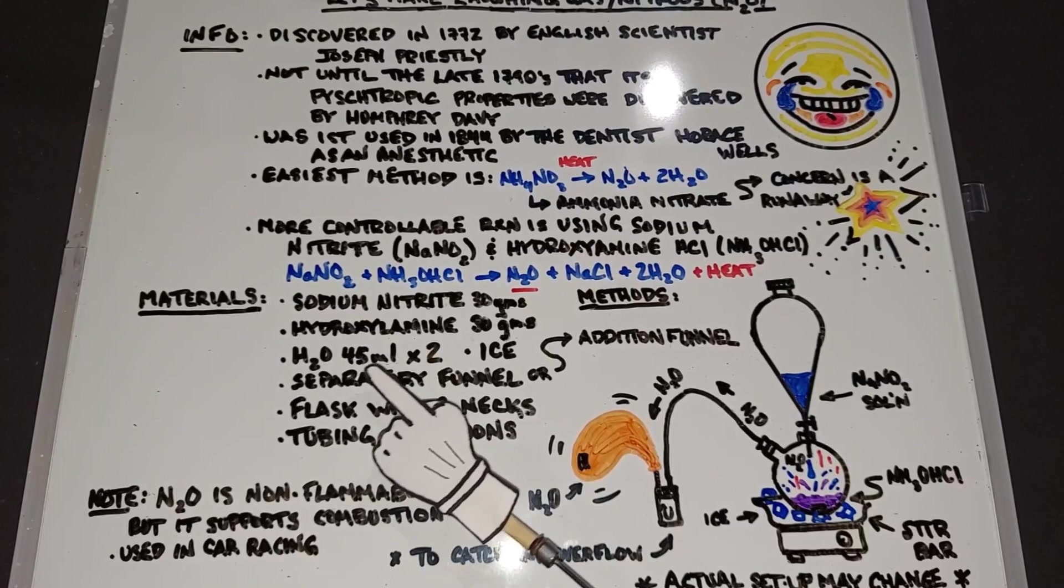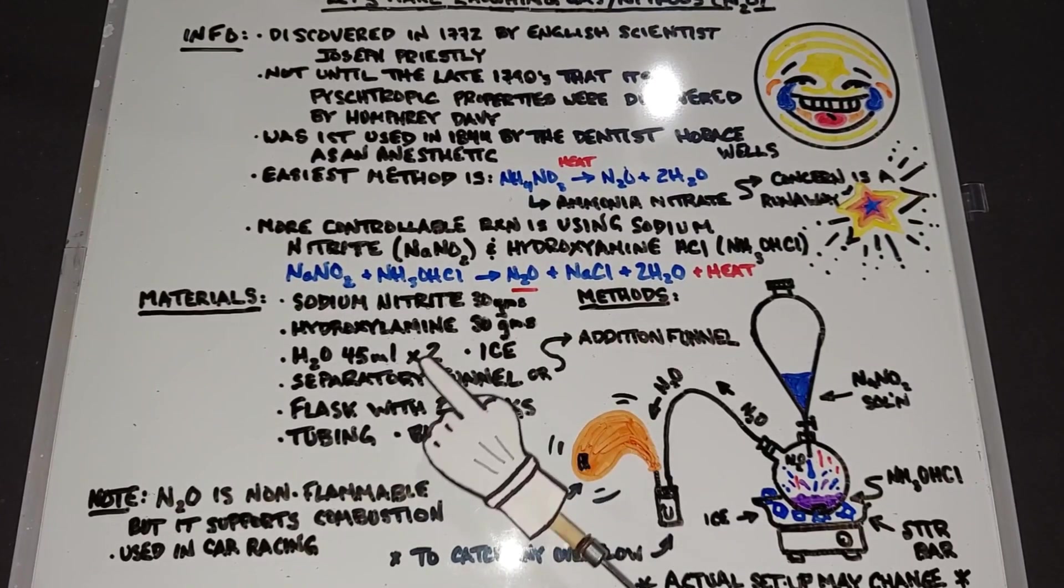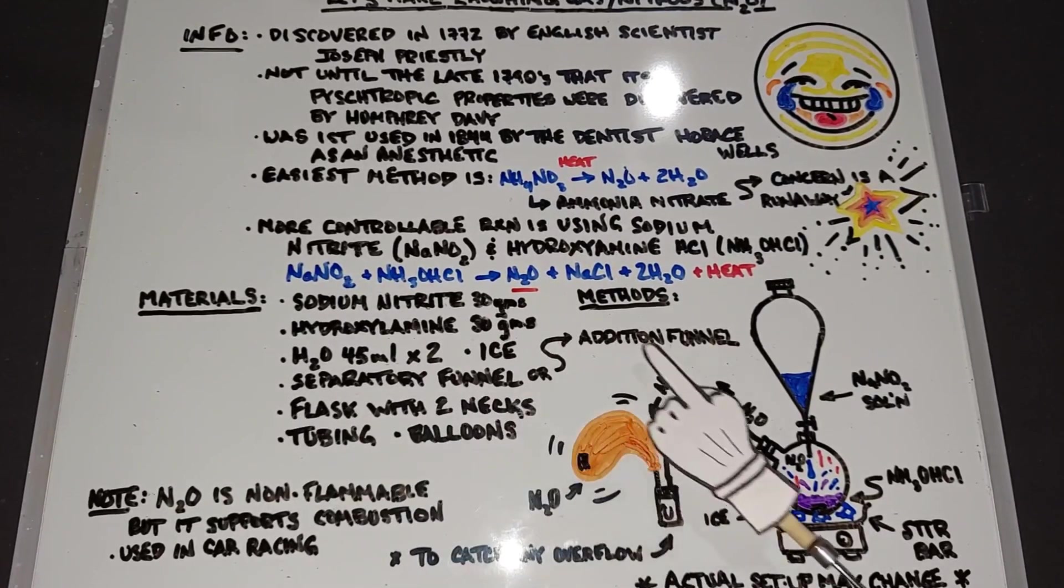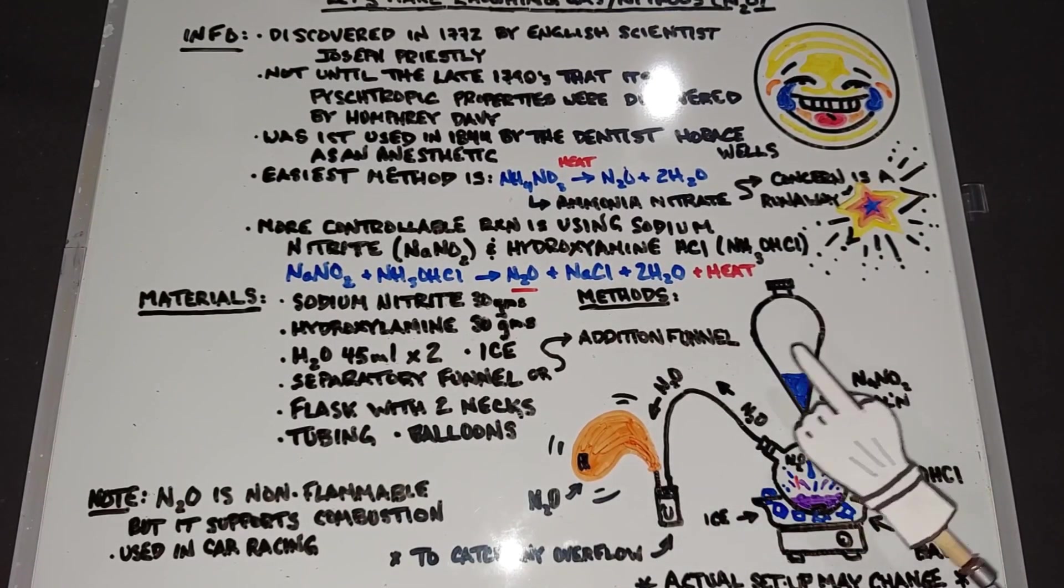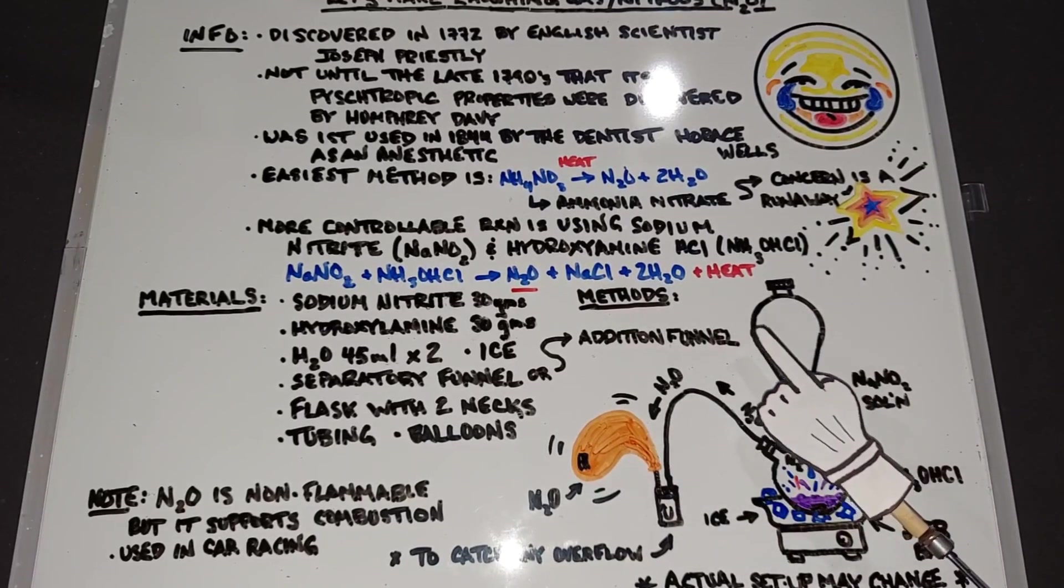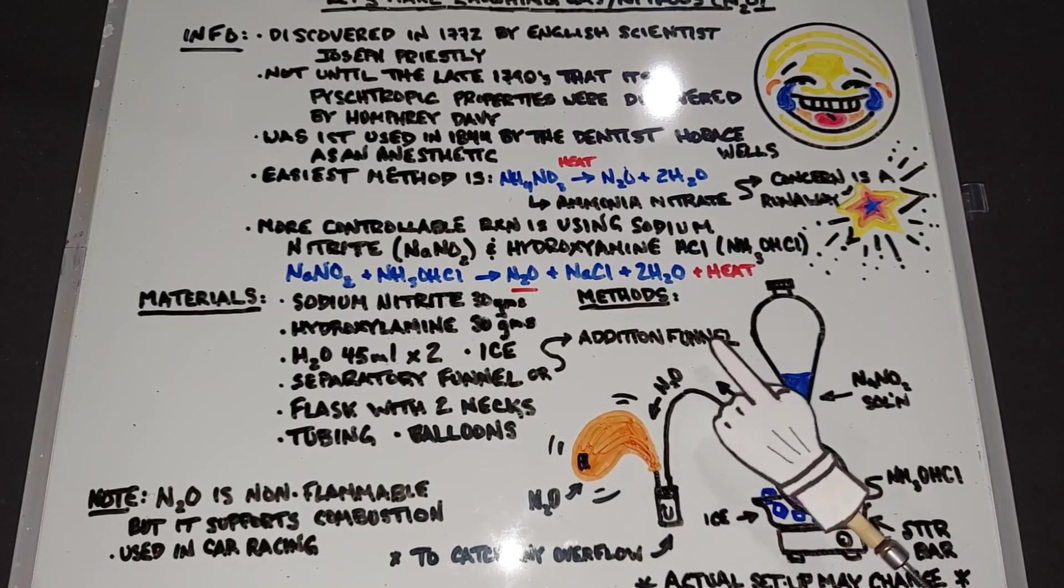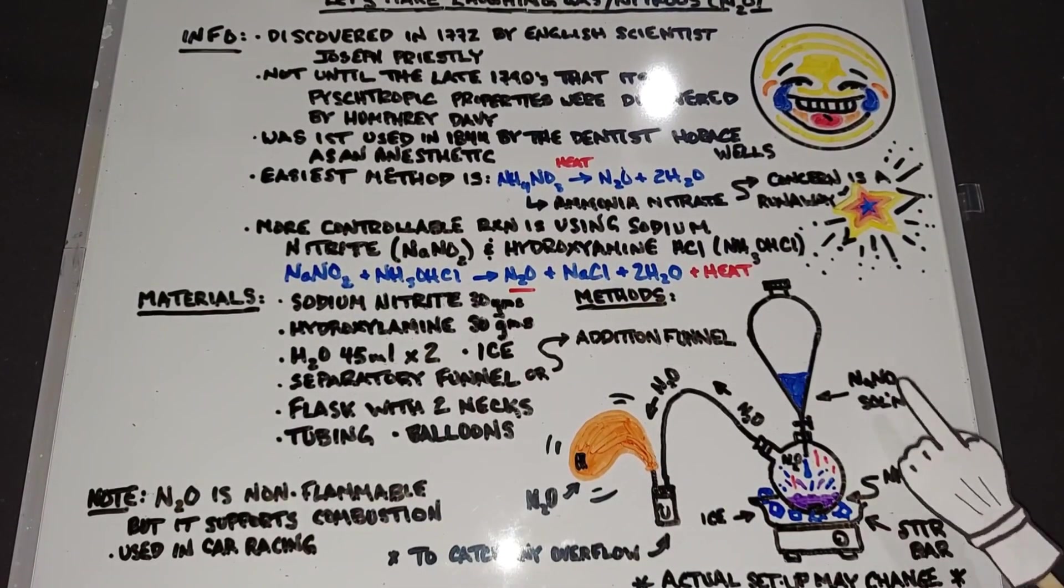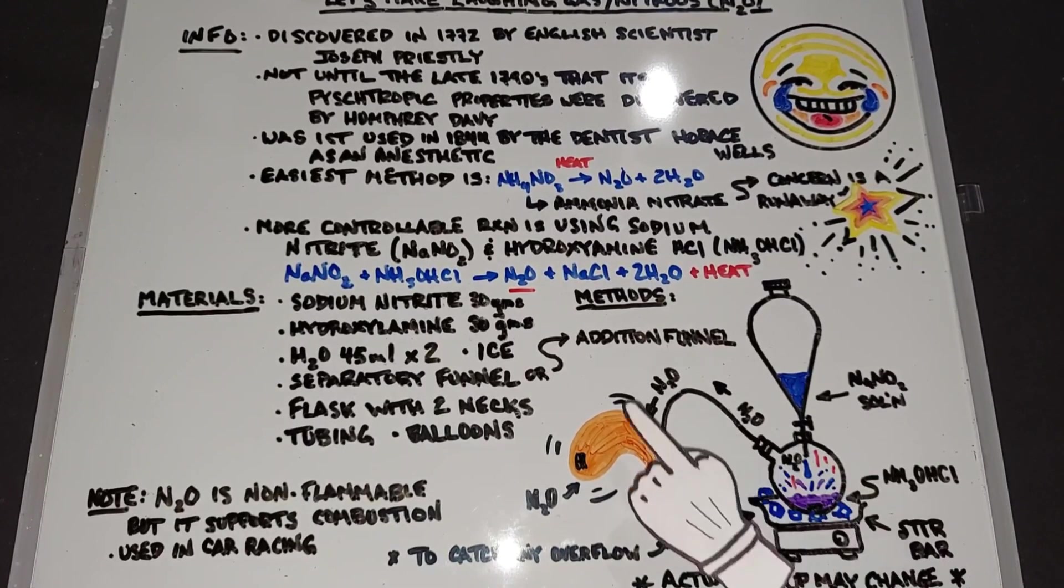We'll also need water, around 45 milliliters times two for each one of these to be dissolved in. We'll need some ice as it's exothermic, a separatory funnel and/or an addition funnel. In my little representation here I have a separatory funnel but I've worked with this before, it's not the greatest, I may end up using an addition funnel. We'll need a flask with two necks.